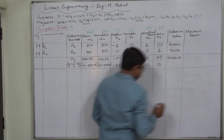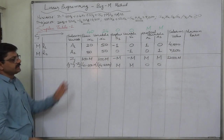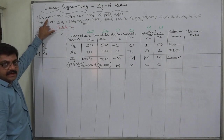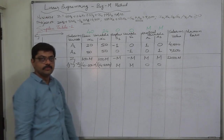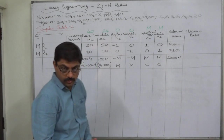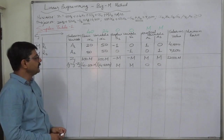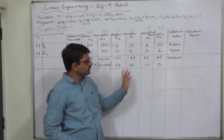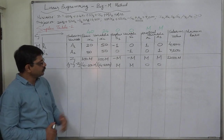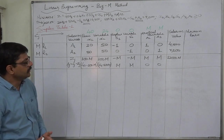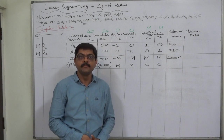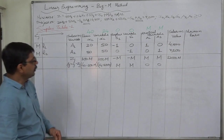After writing the zj values, we check whether this is the optimal solution. Our objective is minimization. For minimization, all delta j values must be 0 or positive for optimality. Four values here are 0 or positive, but the two involving x1 and x2 are not. To simplify those two, we need to consider the value of M — which takes the highest possible value.